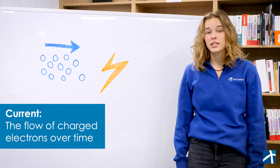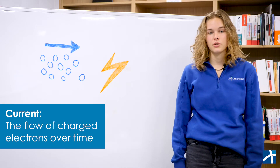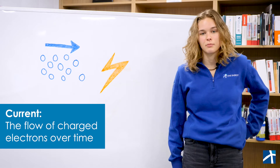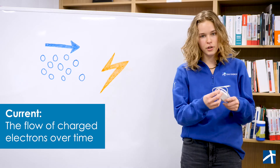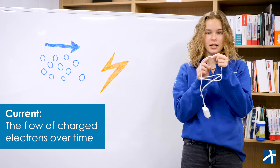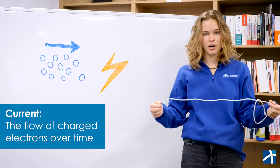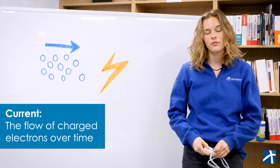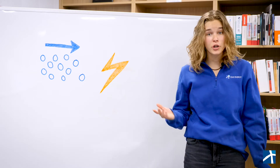Current is the flow of these charged electrons over time — it's how fast these charged electrons are moving. If you look at a phone charger, think about drawing a line on it and counting every electron that crosses the line for 10 seconds. You just counted the flow of charge over time, or the current.